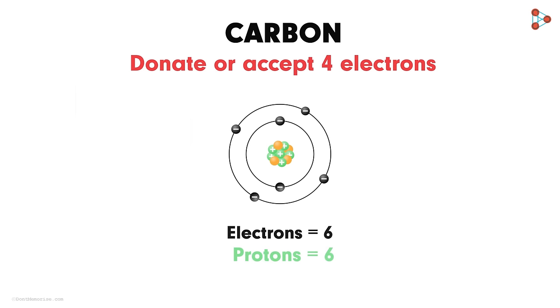This is because donating the 4 electrons will mean that the atom is now left with only 2 electrons. But the number of protons still remain the same, right? That means the atom will gain positive charge and will still be unstable.